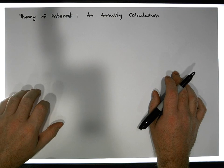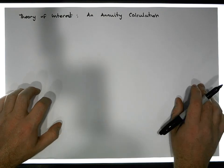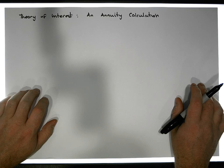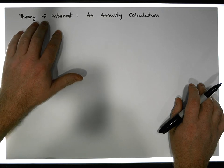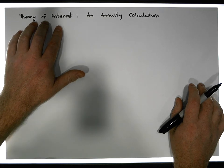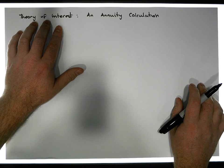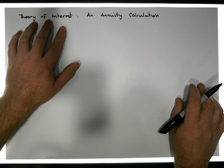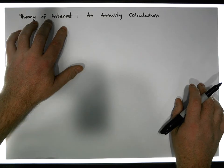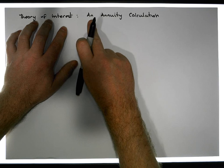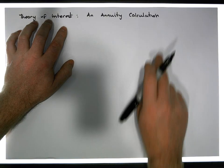Hi guys, this is Jonathan Lambert with the Mathematics Development and Support Service at the National College of Ireland. In this short video, another in our series dealing with theory of interest, and more importantly concentrating on our formula that deals with mortgages, annuities, and sinking funds, we're going to run an annuity calculation.